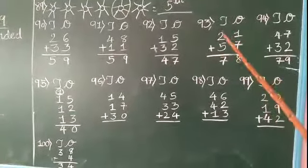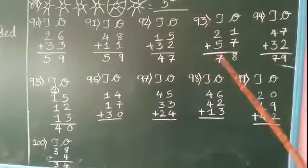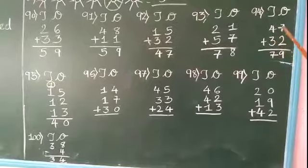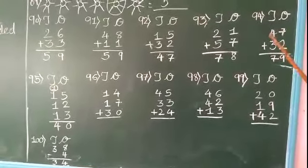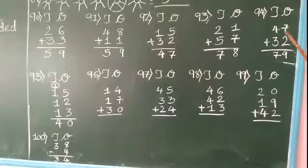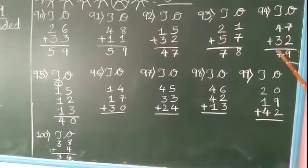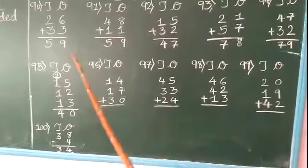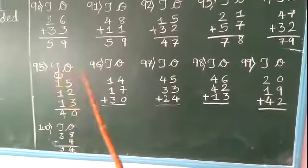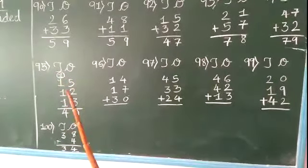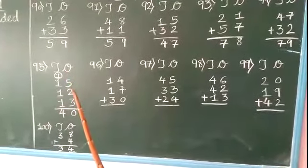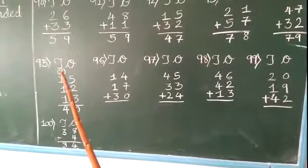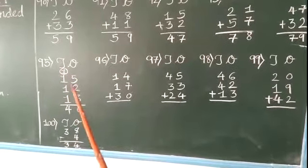78. Number 94: 47 plus 32. 7 plus 2 equals 9, 4 plus 3 equals 7, so 79 we will get. Now 95: 15 plus 15, 12 and 13, so 5 plus 2 is 7, 7 plus 3 is 10, so we have written 1 carry and 0 downside. Now we have to count